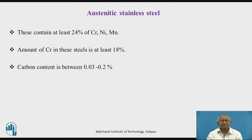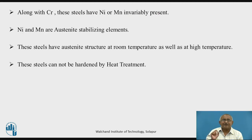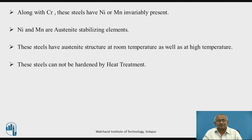Carbon content varies between 0.03 to maximum 0.2 percent, and we rarely observe maximum 0.2 percent carbon. In 90 percent of varieties of austenitic stainless steel, carbon content is less than 0.14 to 0.15. So we find that these steels have excellent chromium to carbon ratio, as a result of which they have very high corrosion resistance. Chromium in solid solution is very high, and as a result, their corrosion resistance is at par or excellent as compared to ferritic and martensitic variety.